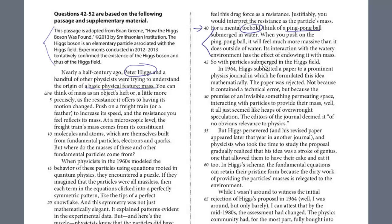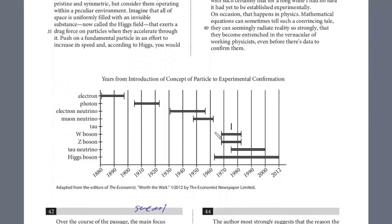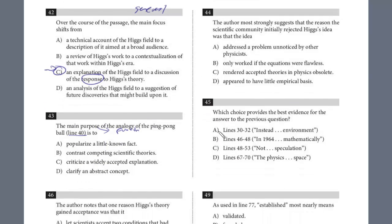And so obviously this passage is about mass and the particles, but this is a way to explain it. And he's giving just an example that most people can relate to, right? Ping pong balls. And so what's the purpose of that? Let's take a look at the responses, but it really should be just like an example that most people can relate to. Popularize a little known fact, contrast competing theories, not that, that doesn't work at all. Criticize, there's no criticism. It clarifies, right? Explains an abstract concept and giving it more applicable terms that people can relate to because people know what ping pong balls are. So the answer is D.